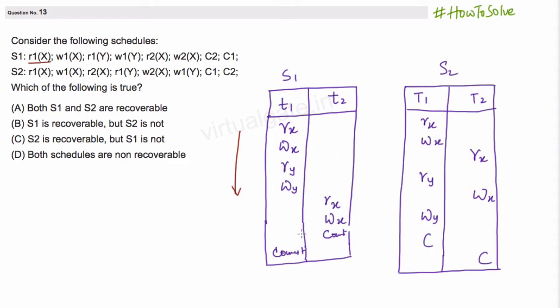The problem is here if you see in this S1 this is write on x and this x is again read by transaction T2 here. This is read on x.